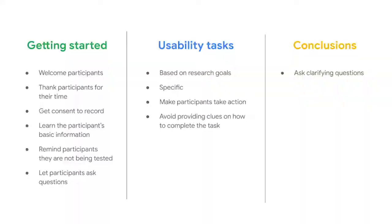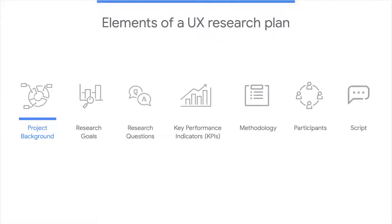After the participant completes the usability tasks, you're ready to wrap things up. Ask any clarifying questions you might have, end the video recording, and then thank them for participating. You now know the seven elements of a UX research plan: the project background, research goals, research questions, key performance indicators, methodology, participants, and script. You're ready to create your own plan and have completed the first of the four steps in a UX research study — plan the study. Congratulations! Next, we'll discuss respecting privacy and user data when conducting research.